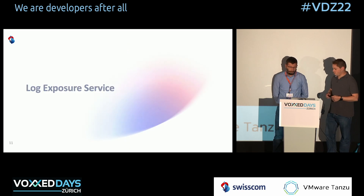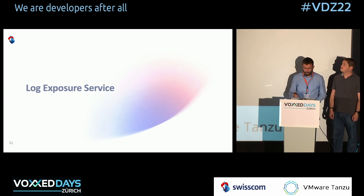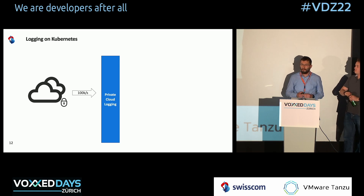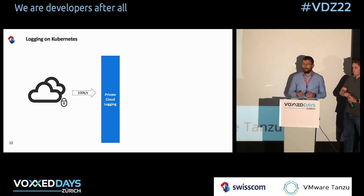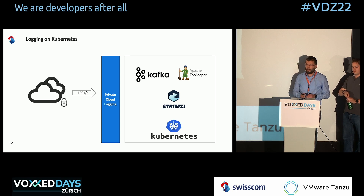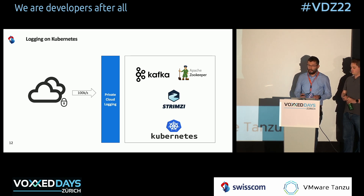Let's head over to the second use case: the log exposure service. As Adrian mentioned, we have our private cloud, and we came to the issue that we need to make it easy for customers to access the logs of their workloads. The solution had to scale with the amount of logs generated — at the moment our workload generates around 100,000 events per second. The simple solution: use Kubernetes and deploy Kafka and Apache Zookeeper using Strimzi, so cloud services can push logs into Kafka and customers access them by connecting to Kafka. But this solution had to be turned into a proper service — that was the journey.